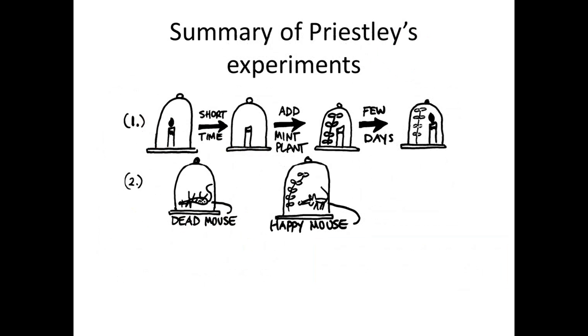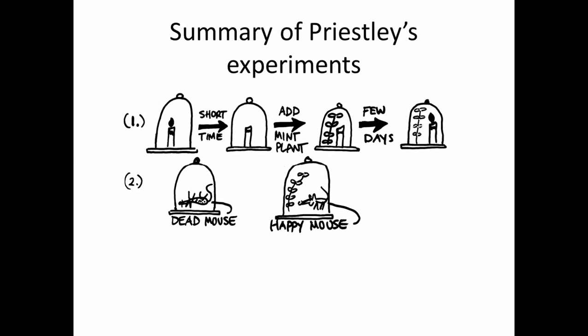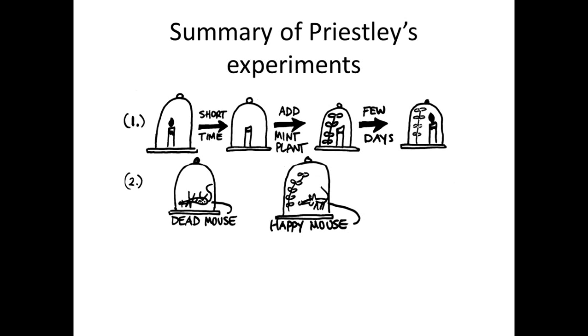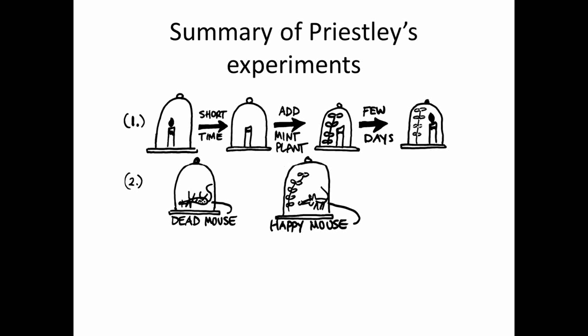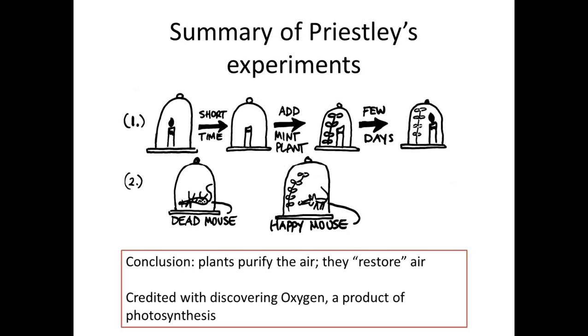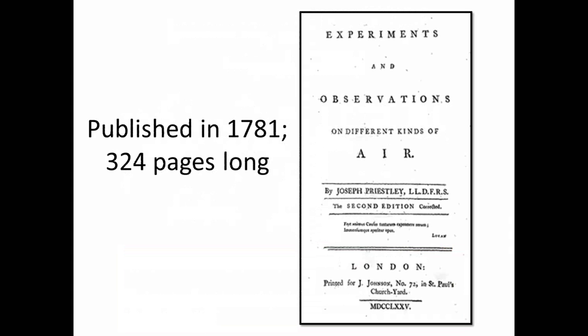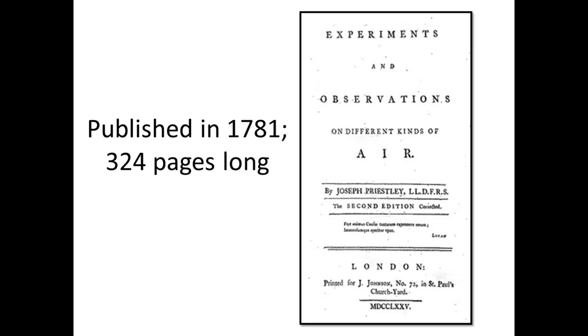In summary, Priestley found that plants are purifying or restoring the air to a better state. A candle goes out in a sealed jar, but adding a plant keeps the air replenished. Similarly, a mouse in a jar uses up the oxygen, but a plant inside counteracts that and adds oxygen back in. Many scientists consider this the initial discovery of oxygen through the process of photosynthesis. He published this in 1781 in a 324-page volume called Experiments and Observations on Different Kinds of Air.